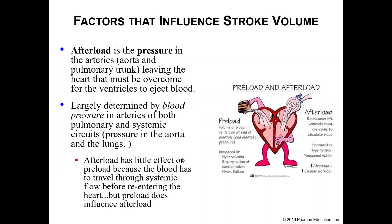The last factor is afterload — the pressure in the arteries, both the aorta and the pulmonary trunk, that the blood has to overcome for the ventricles to actually eject blood through the vessels. There is pressure within your pulmonary trunk and your aorta — your blood pressure. If you would like the blood to go through the vessel, you have to push harder than the pressure that's already there; otherwise the blood won't move through the vessel.